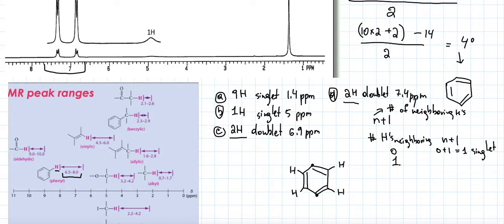If I have one neighboring hydrogen, one plus one is equal to two, I'm going to be doublet. Doublet, two neighboring hydrogens, two plus one is a three, triplet, and so on. You can look at your textbook to see what the rest of them are. Triplet, quartet, and so on.